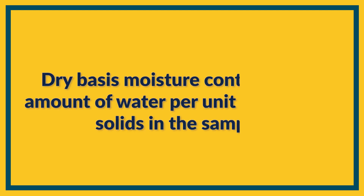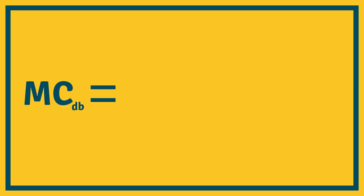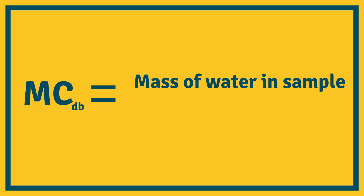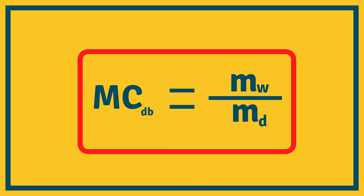Now let us look at dry basis. The dry basis moisture content is the amount of water per unit mass of dry solids present in the sample. The formula is: moisture content dry basis equals mass of water in the sample divided by mass of dry solids in the sample. In shorter form: MC_db = mw / md, where mw stands for mass of water and md stands for mass of dry solids.